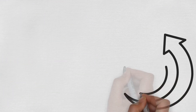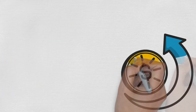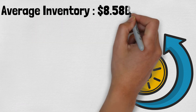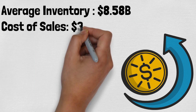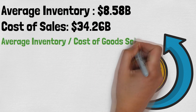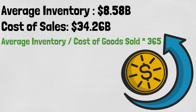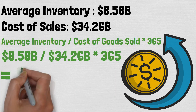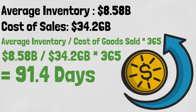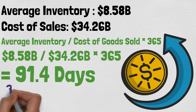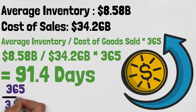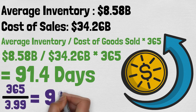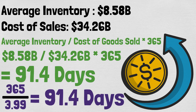You can also use the inventory turnover ratio to find out how many days it will take for the company to sell its current inventory. For this, divide the average inventory by the cost of goods sold and multiply the result by 365, or simply divide 365 by the inventory turnover ratio. For Intel, it would have taken 91.4 days to sell the 2020 inventory.